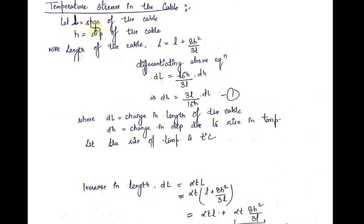Suppose small l is the span of the cable — by span I mean the horizontal distance between the supports. Let small h is the dip of the cable, which is the maximum depth of the cable. Now we know that the length of the cable subjected to a UDL is equal to small l plus 8h squared by 3l.